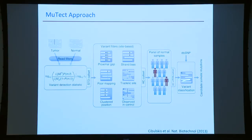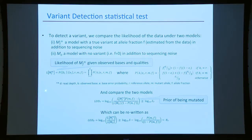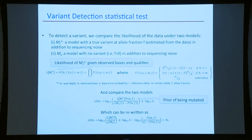The Bayesian model compares the likelihood of a mutation at frequency f versus a null model where variation comes from noise, using an independent error model and quality scores to estimate error. We add priors for mutated versus not-mutated sites. After filtering, we use a panel of normals to remove additional artifacts, then annotate germline versus somatic.